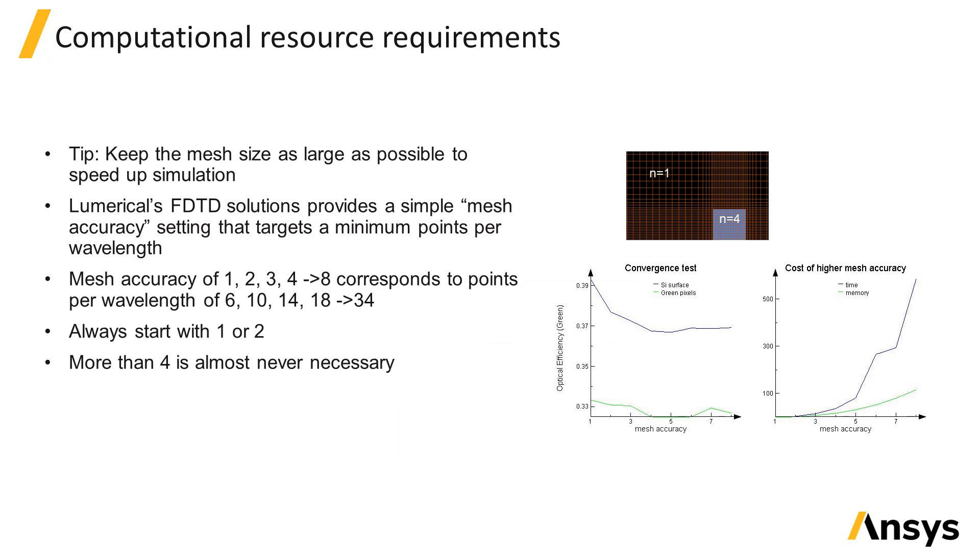Lumerical's FDTD solutions provides a simple mesh accuracy setting that targets a minimum points per wavelength in all regions of the simulation and automatically adapts to the refractive index of the different materials. The mesh accuracy of 1 through 8 corresponds to points per wavelength targets of 6, 10, 14, 18, and so on up to 34.